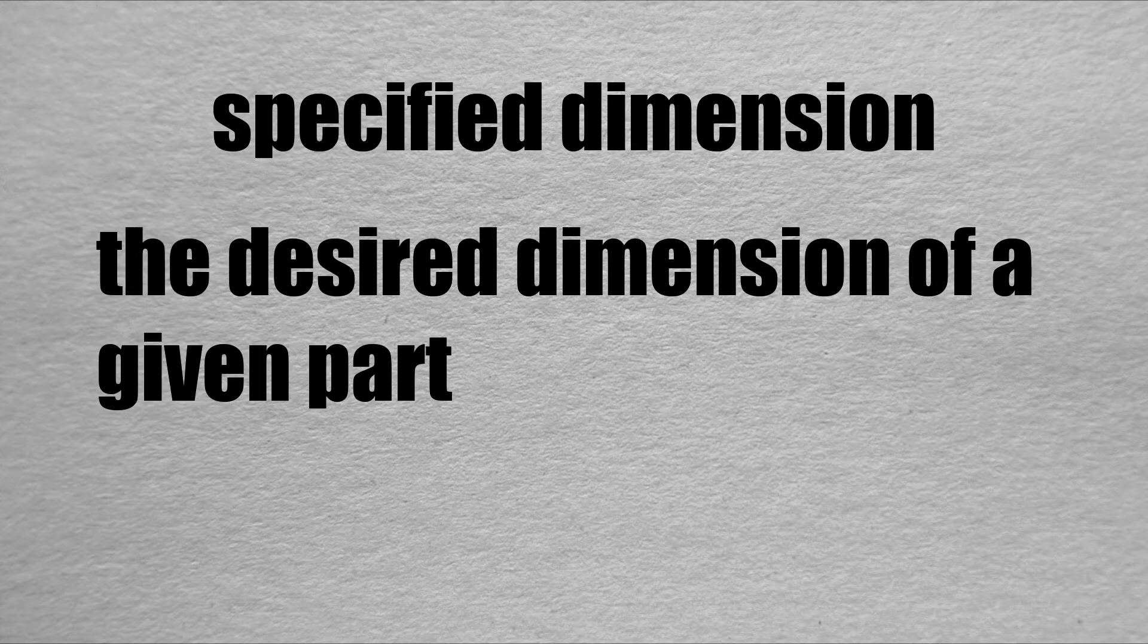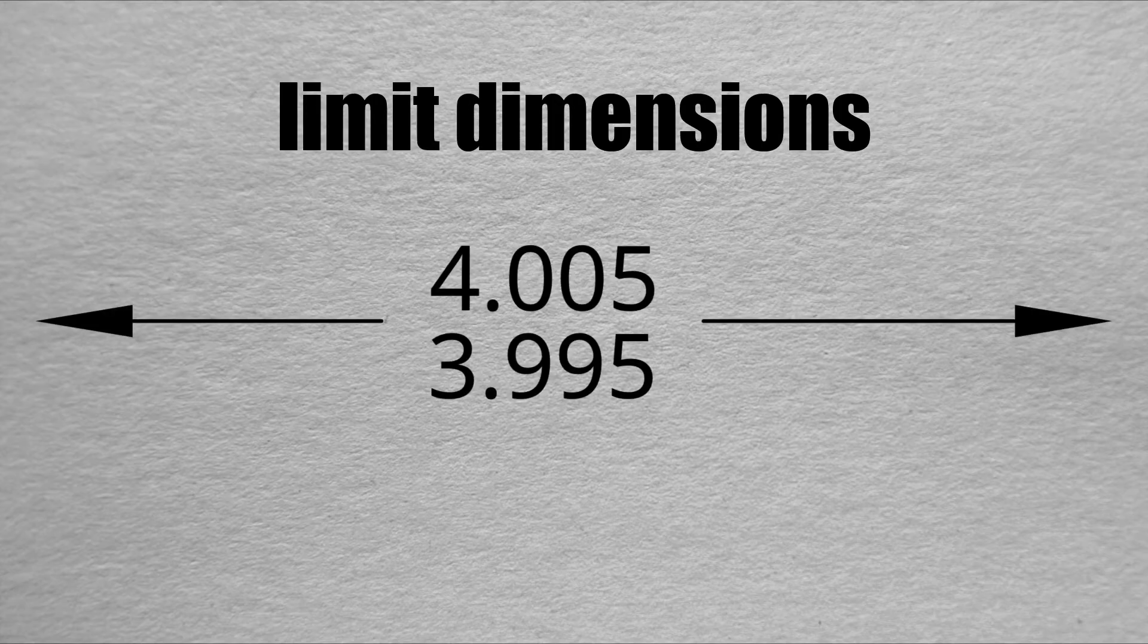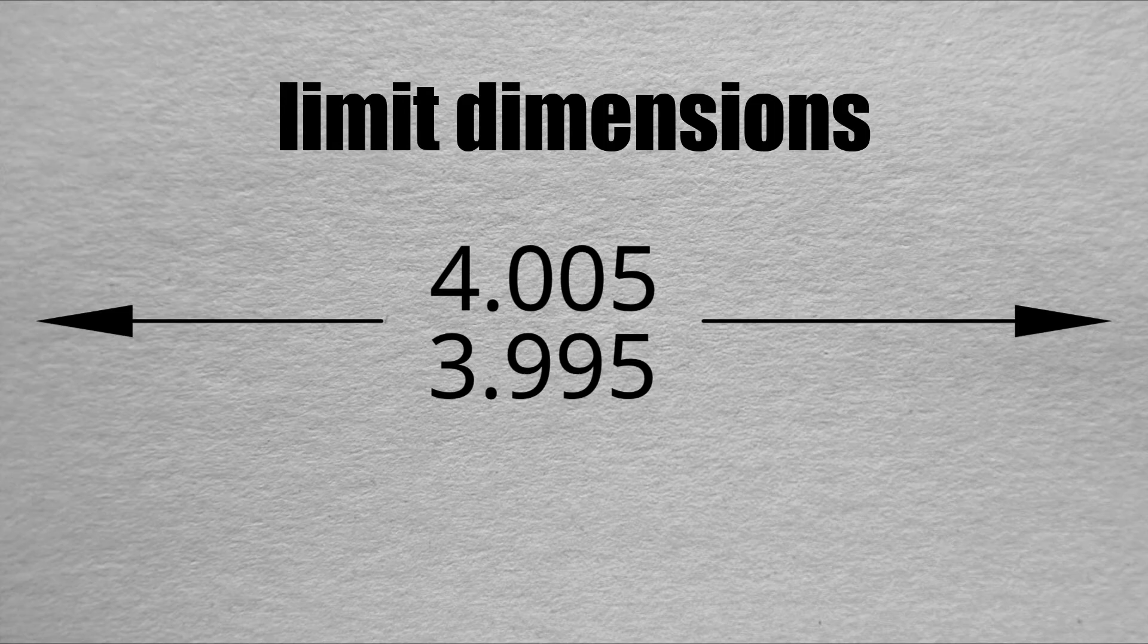Now that we've cleared that up, let's move on to our first type of tolerance. Limit dimensions are easy to spot compared to the other two basic types of tolerances. It doesn't even have tolerance in the name.